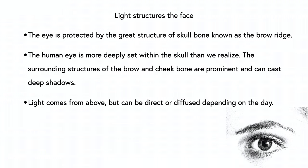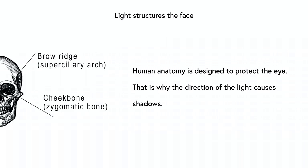Light structures the face. The eye is protected by the great structures of skull bone known as the brow ridge. The human eye is more deeply set within the skull than we realize. The surrounding structures of brow and cheekbone are prominent and cast deep shadows. Light comes from above but it can be direct or diffused depending on the day. Human anatomy is designed to protect the eye — that is why the direction of the light causes shadows.